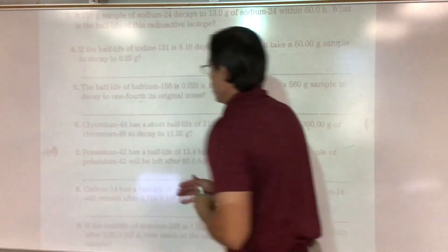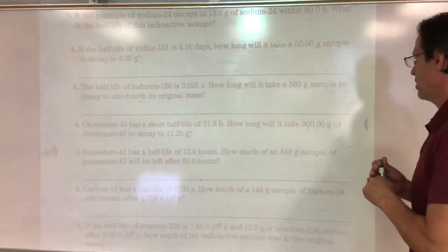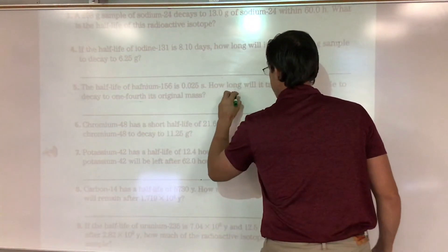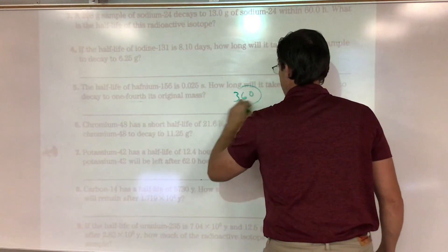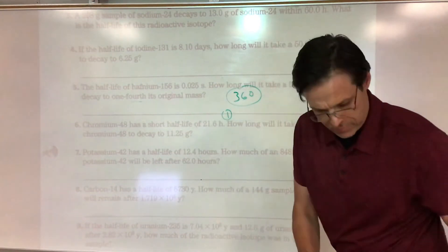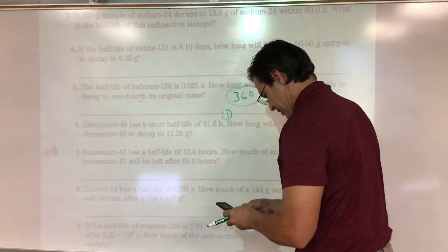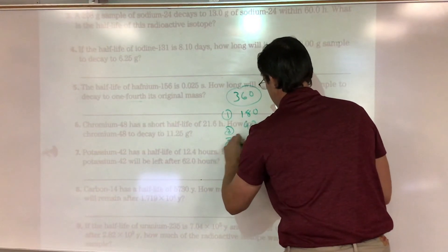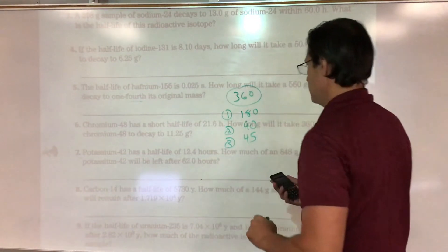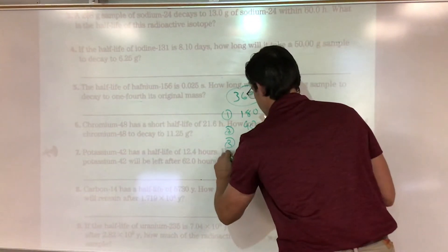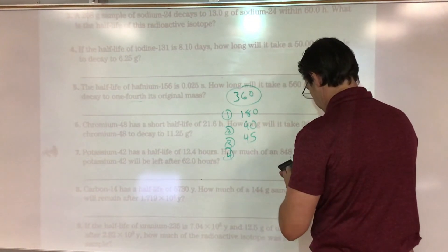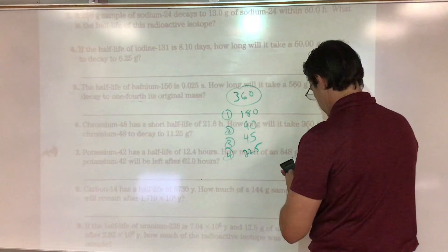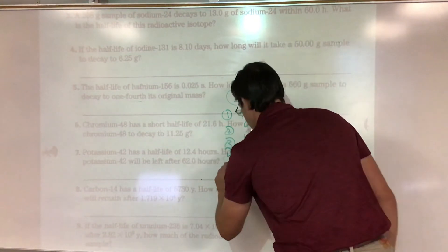Number six: chromium-48 has a half-life of 21.6 hours. How long will it take 360 grams to decay to 11.25 grams? Half of 360 is 180, half of 180 is 90, half of 90 is 45, half of 45 is 22.5.